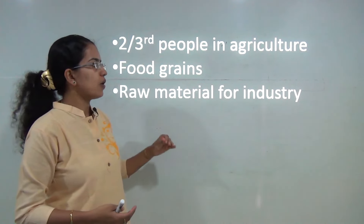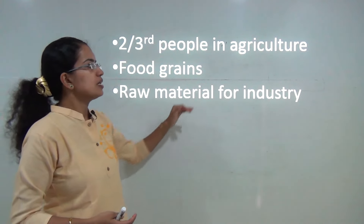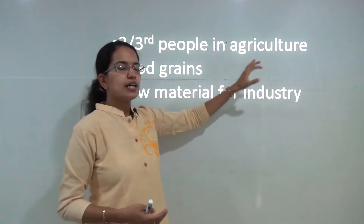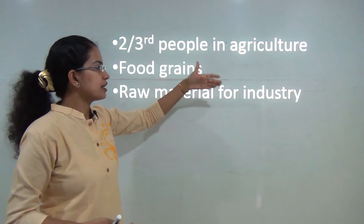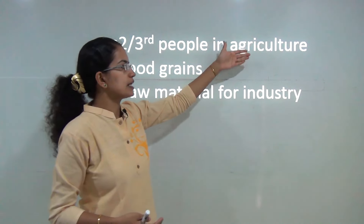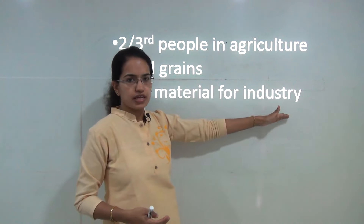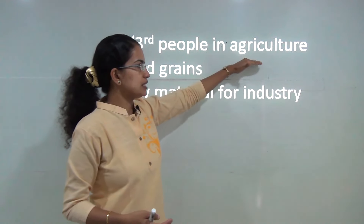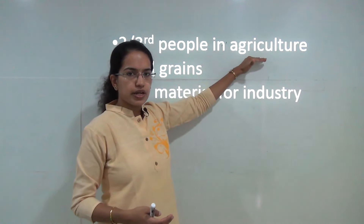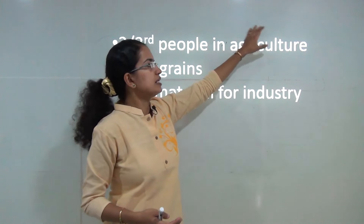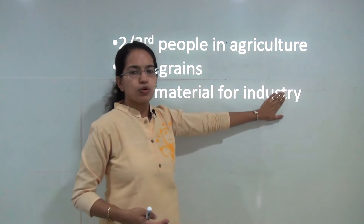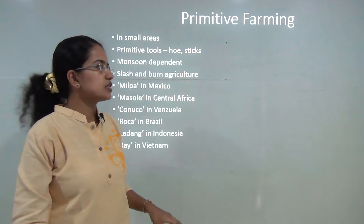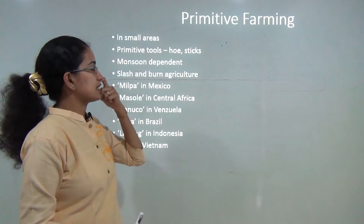Agriculture is important not only because we get food grains, but it also provides raw material for various industries. The primary sector is important here, and this primary sector is a source of raw material for secondary sector activities.